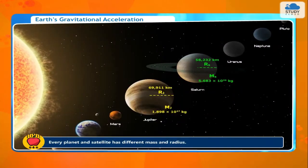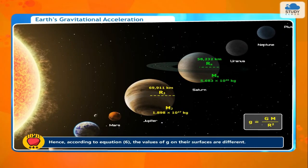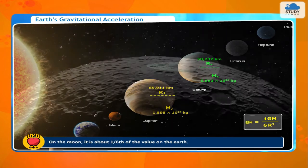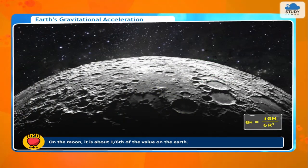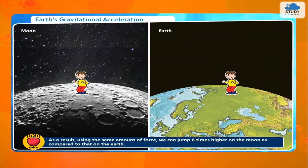Every planet and satellite has a different mass and radius. Hence, the values of g on their surfaces are different. On the Moon, g is about one-sixth of the value on Earth. As a result, using the same amount of force, we can jump 6 times higher on the Moon compared to on the Earth.